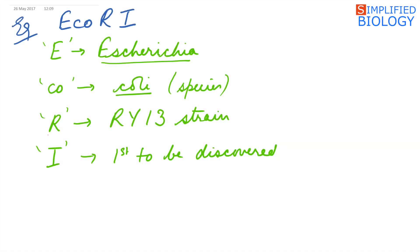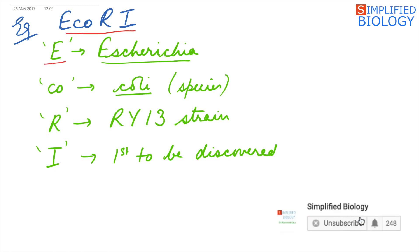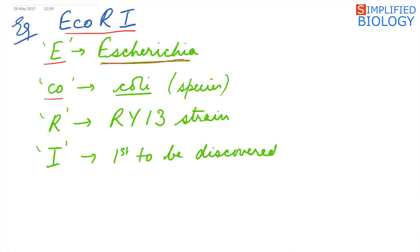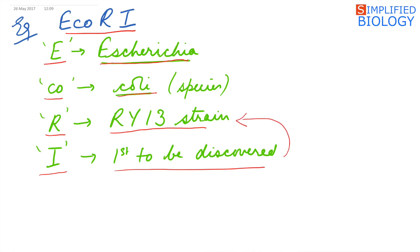For example, EcoRI: 'E' represents the first letter of the genus Escherichia. 'co' represents the first two letters of the species coli. 'R' represents the RY13 strain of the bacterium. And '1' indicates it was the first to be discovered from that particular strain.